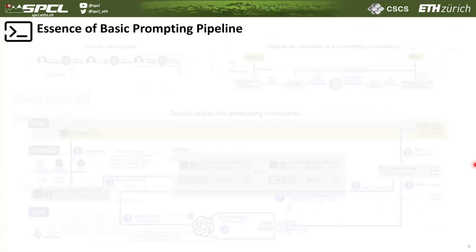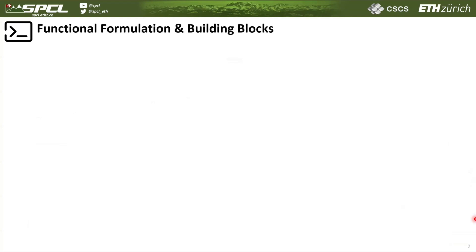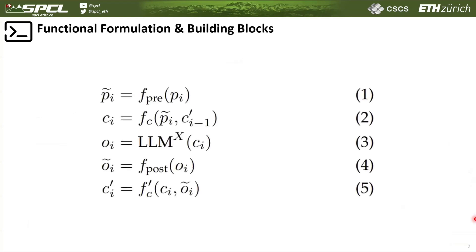In the essence of prompting, we extract the fundamental building blocks of the prompting pipeline, starting from the user that sends a prompt to the LLM that may get pre-processed, and then follows other basic steps up to the point where we get the reply from the LLM. We also develop a so-called functional formulation of the prompting pipeline, where we provide a way to mathematically describe these different steps to facilitate, for example, developing automated schemes for prompting or facilitating things like scheduling, or in general thinking about this whole process.